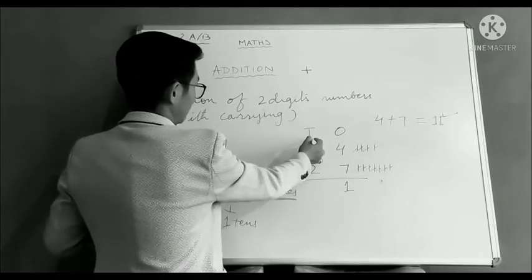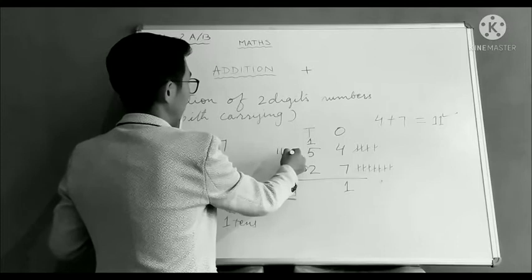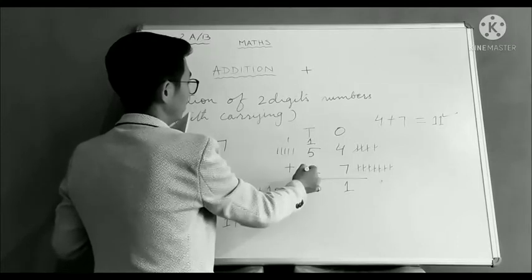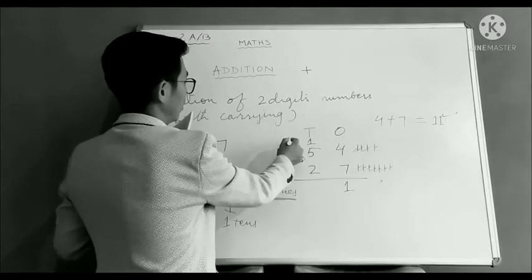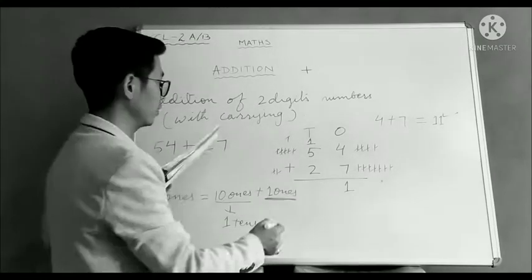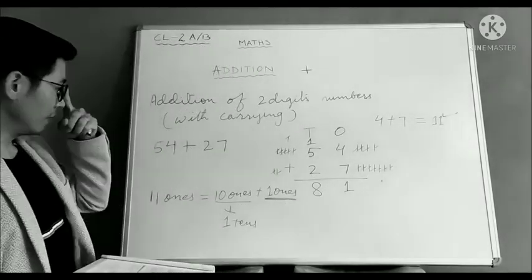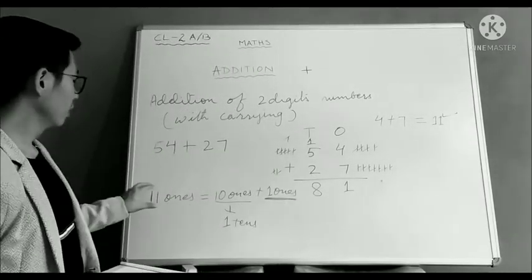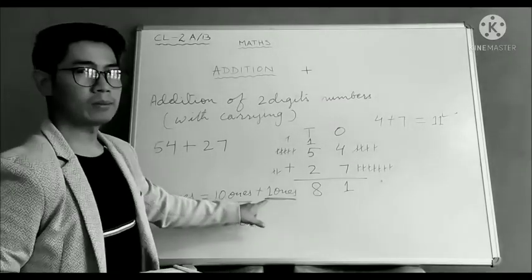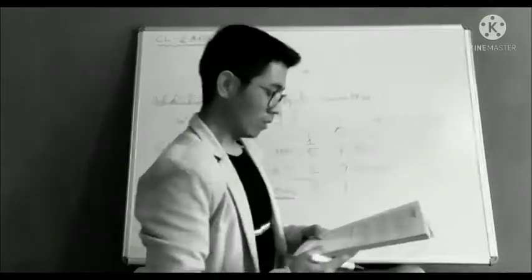So we add 5 and 1 and 2. Counting: 1, 2, 3, 4, 5, 6, 7, 8. So how much you got? 8. This is very much easy. You just need to learn this thing to carry the number.